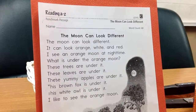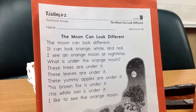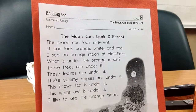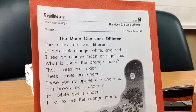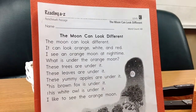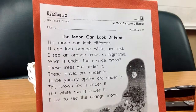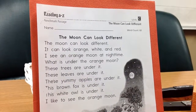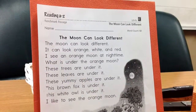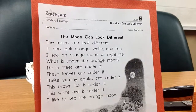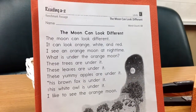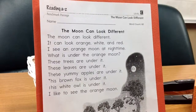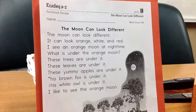I see an orange moon at nighttime. What is under the orange moon? These trees are under it. These leaves are under it. These yummy apples are under it. This brown fox is under it. This white owl is under it. I like to see the orange moon.